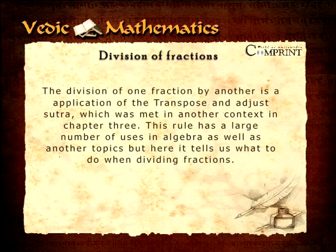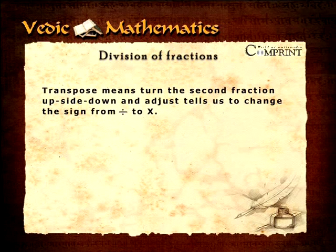Division of fractions. The division of one fraction by another is an application of the transpose and adjust sutra which was met in another context. This rule has a large number of uses in algebra as well as other topics, but here it tells us what to do when dividing fractions. Transpose means turn the second fraction upside down, and adjust tells us to change the sign from division to multiplication. In the given example, the second fraction 5 by 8 is transposed to 8 by 5 and the sign is adjusted to multiplication. The two fractions are then cancelled down and multiplied in the usual way to give the answer of 7 by 10.